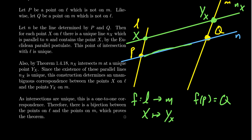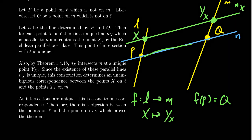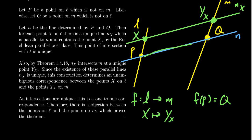Notice we started with points X on L; we could have started with points on M and worked backwards. It has an inverse — that also proves it's a bijection. So the map f is, in fact, a bijection: it's one-to-one and onto.